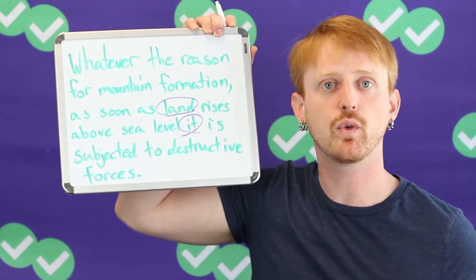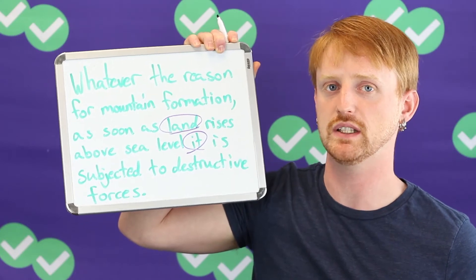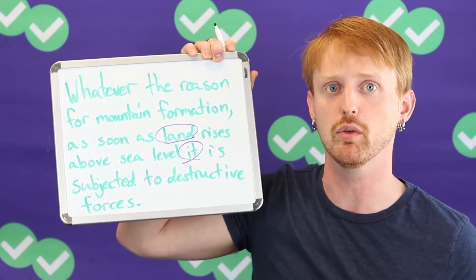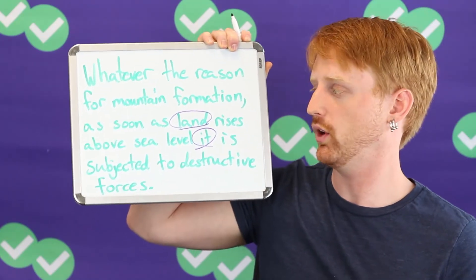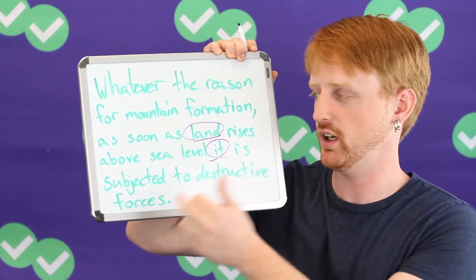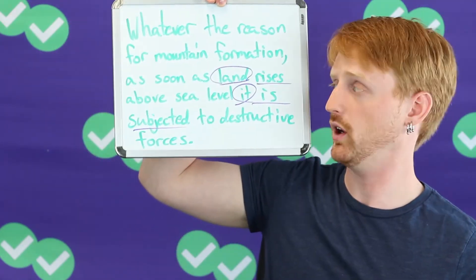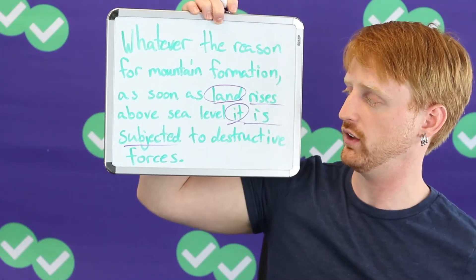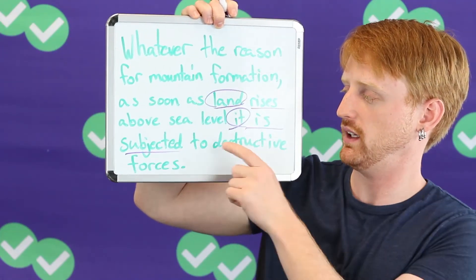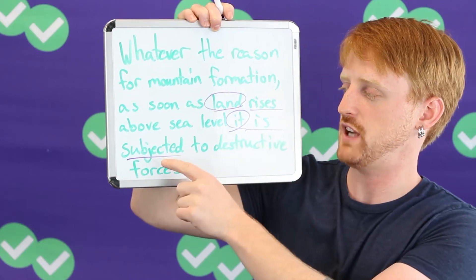For every subject, there must be at least one verb. So because there are two subjects here, 'rises' is a verb and 'is subjected' is another verb. So we have: land rises, and it is subjected.